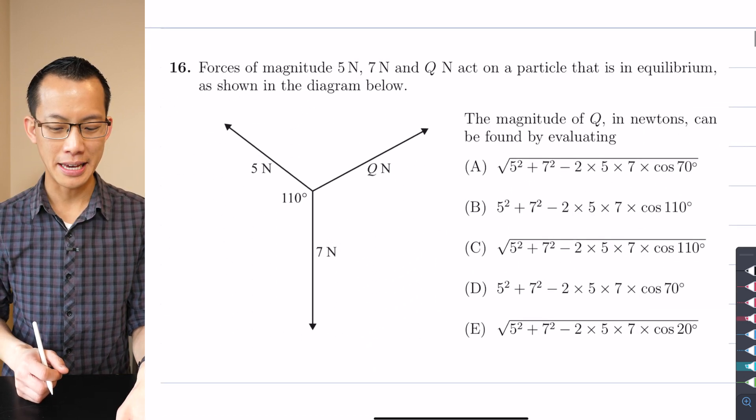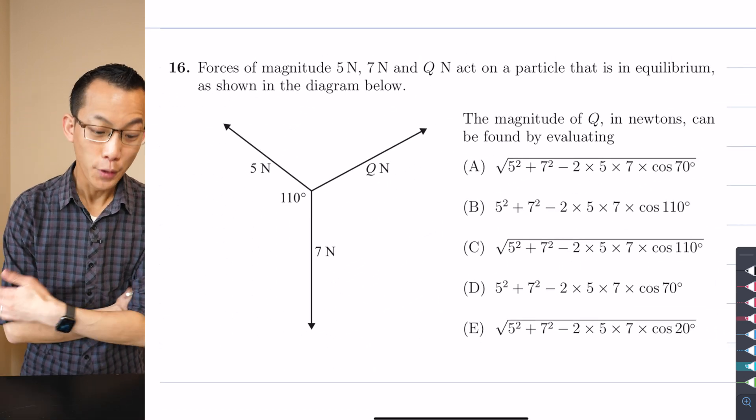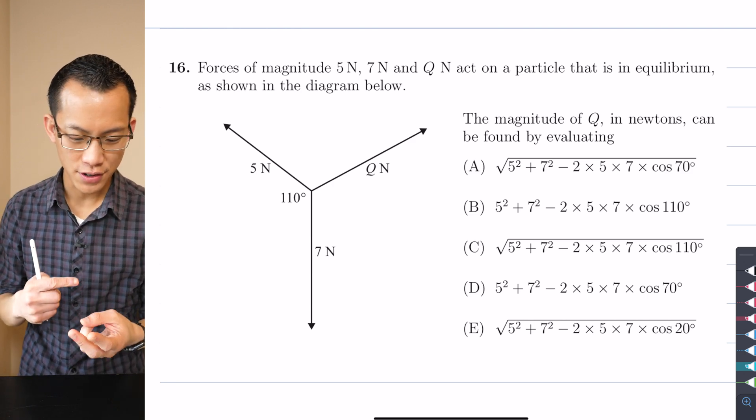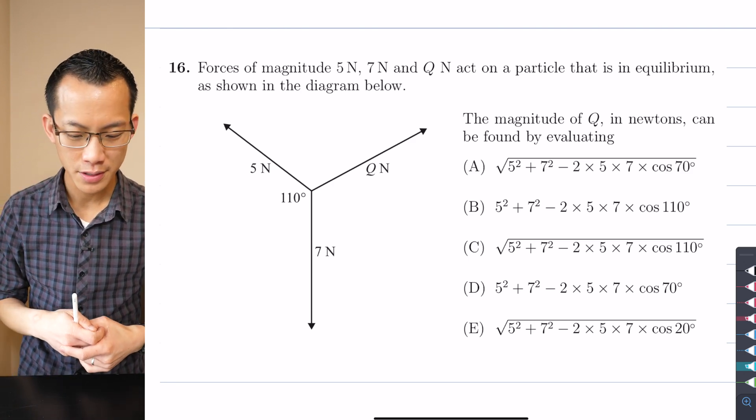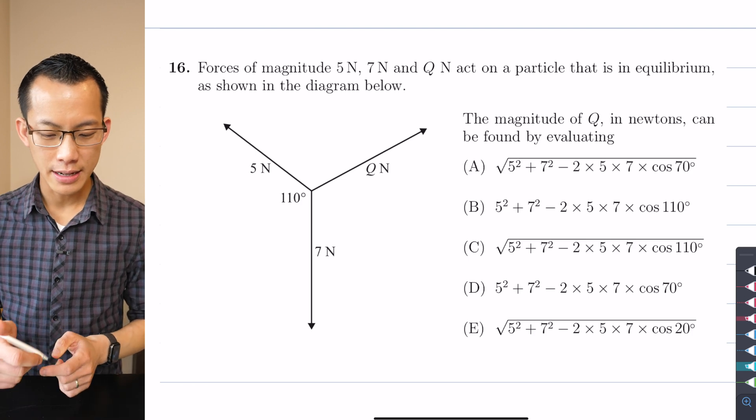Let's have a look at this first example together. Forces of magnitude 5 Newtons, 7 Newtons, and some unknown number of Newtons, Q Newtons, act on a particle that is in equilibrium.